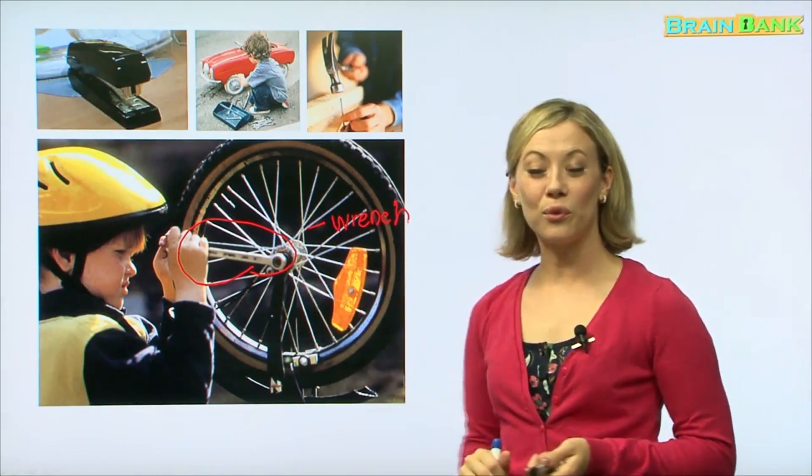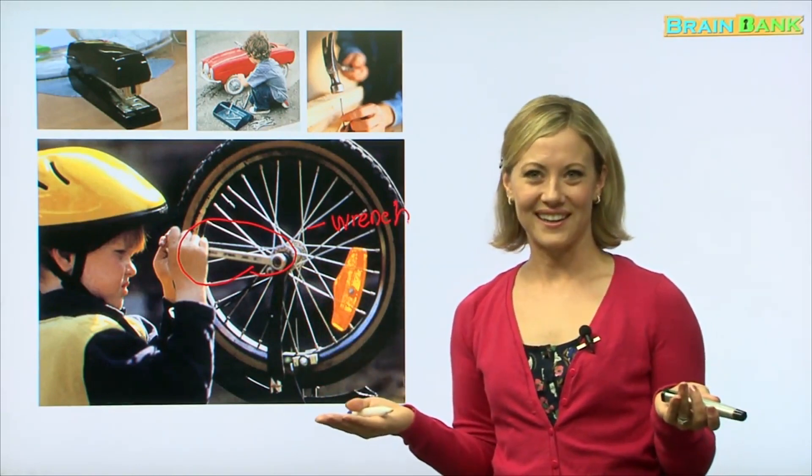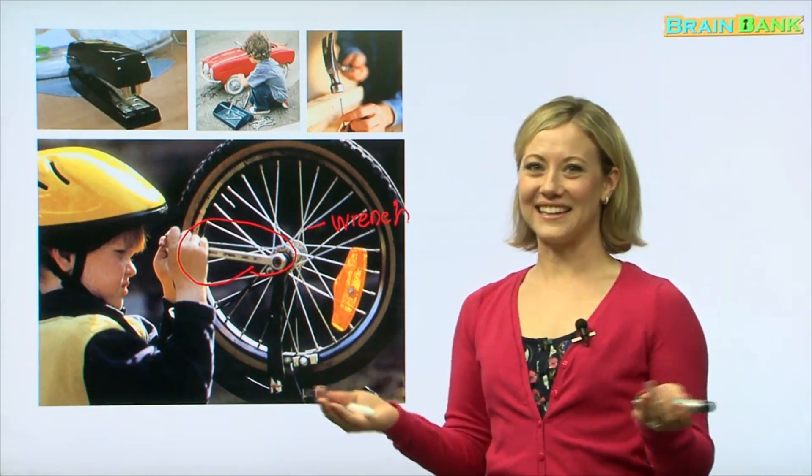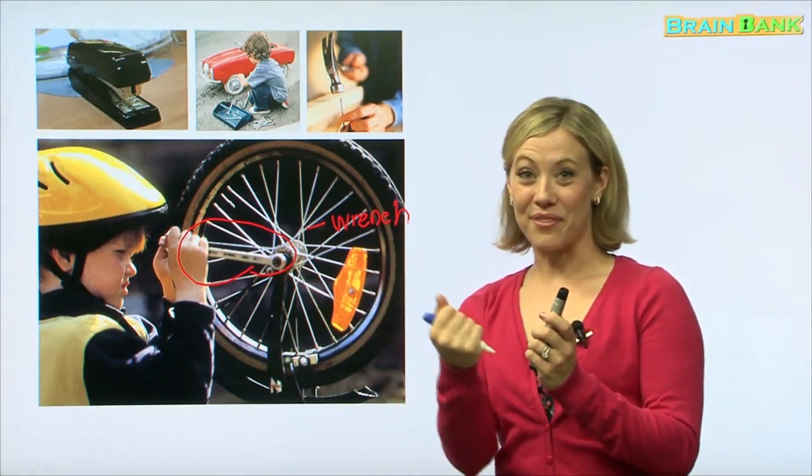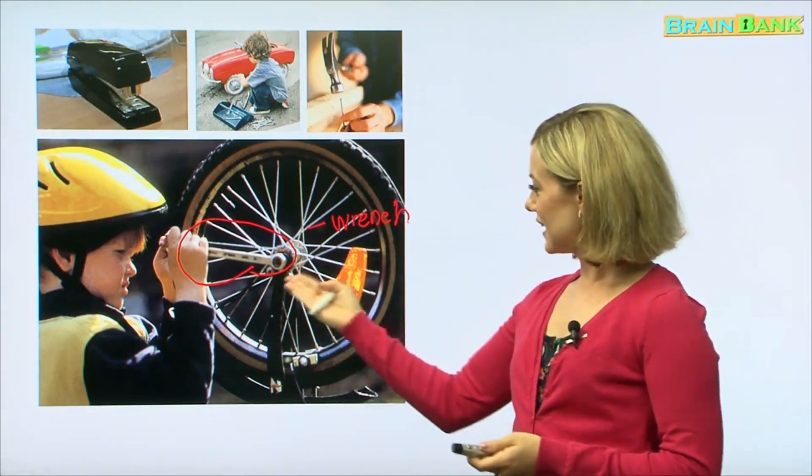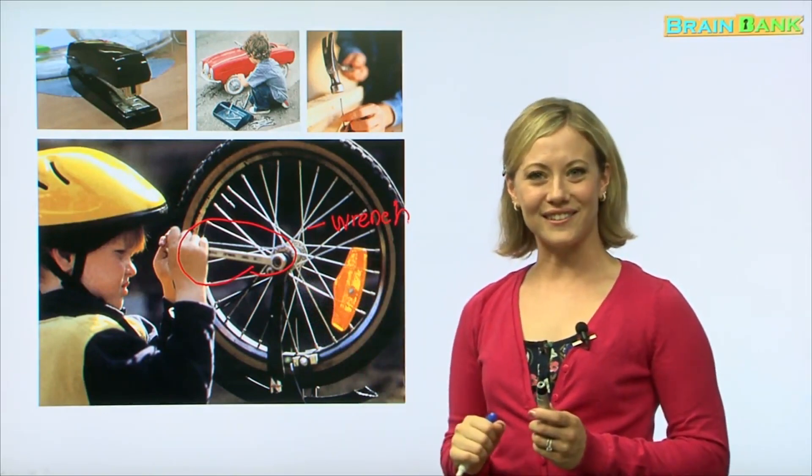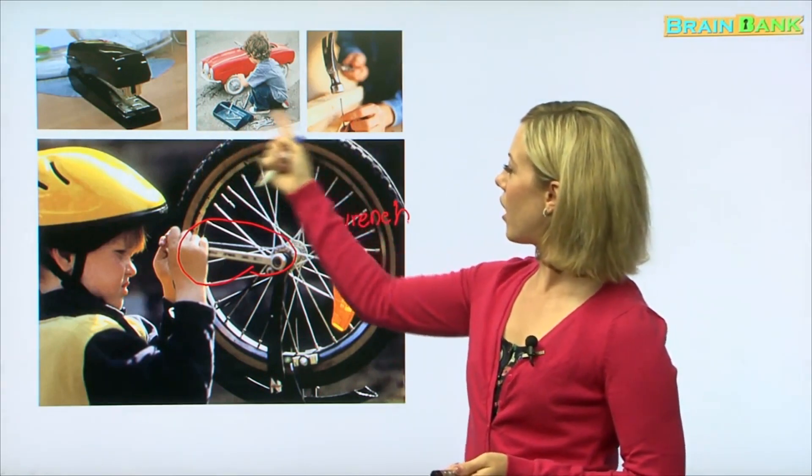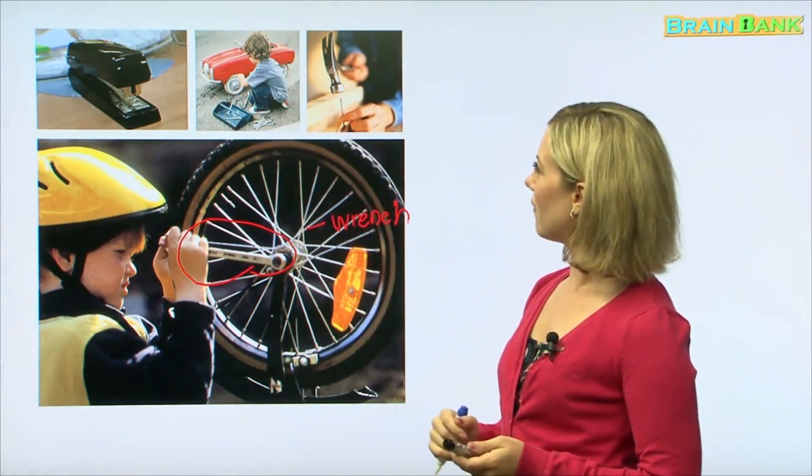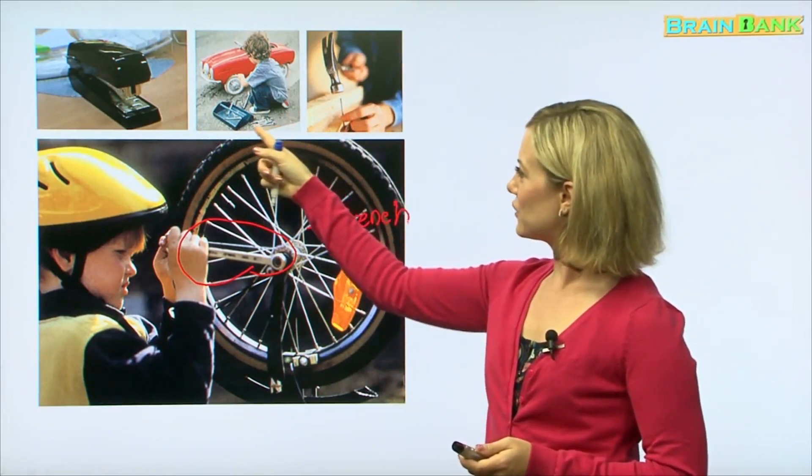This is a wrench, and what do we use a wrench for? That's right, we use it to tighten something, maybe a nut. In his case he's tightening the tire of his bicycle so he can ride it. And up here we have some other tools as well. We have a hammer, it looks like some more wrenches and a stapler.